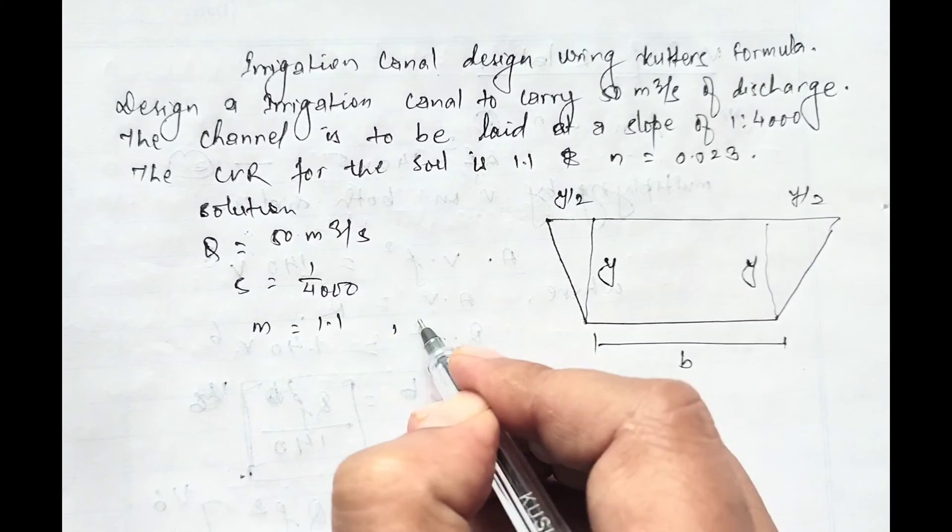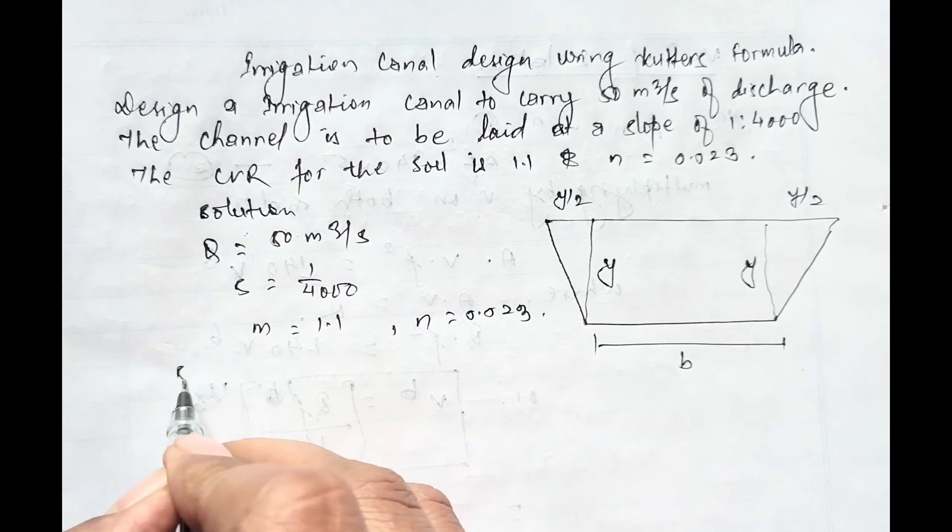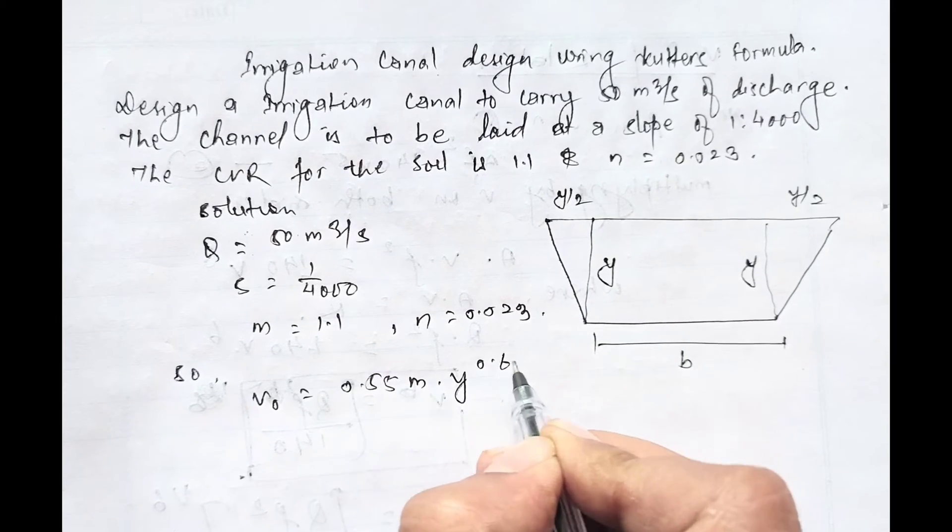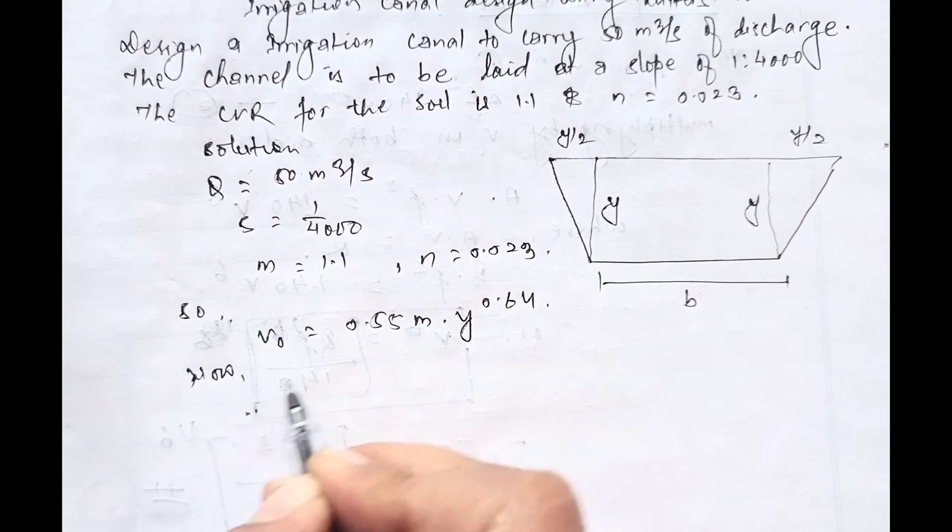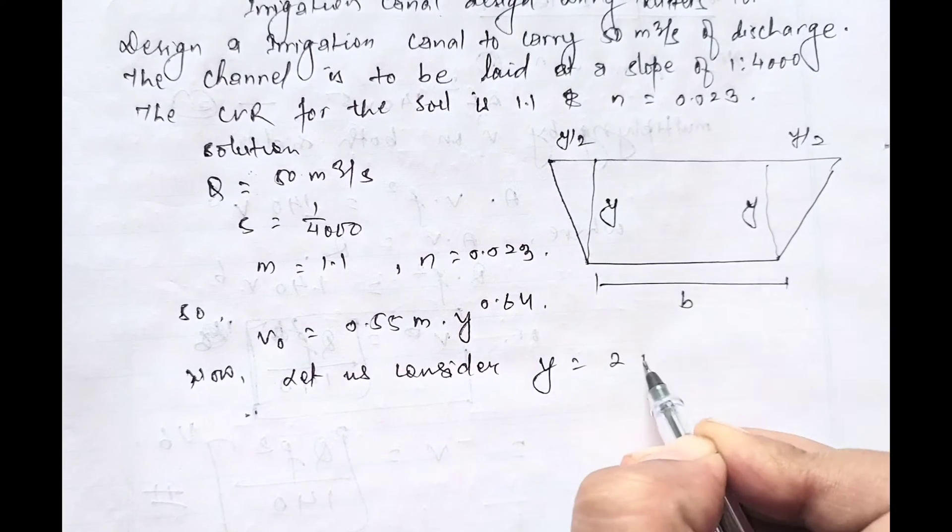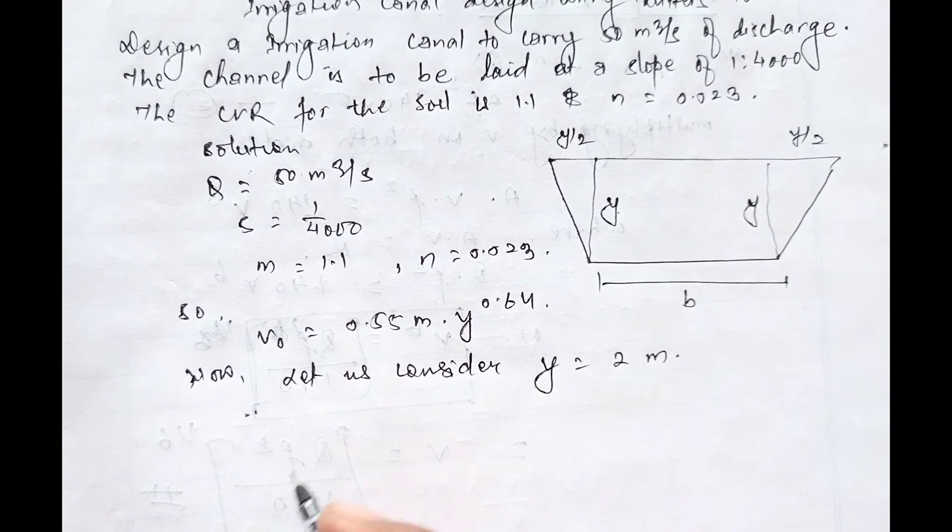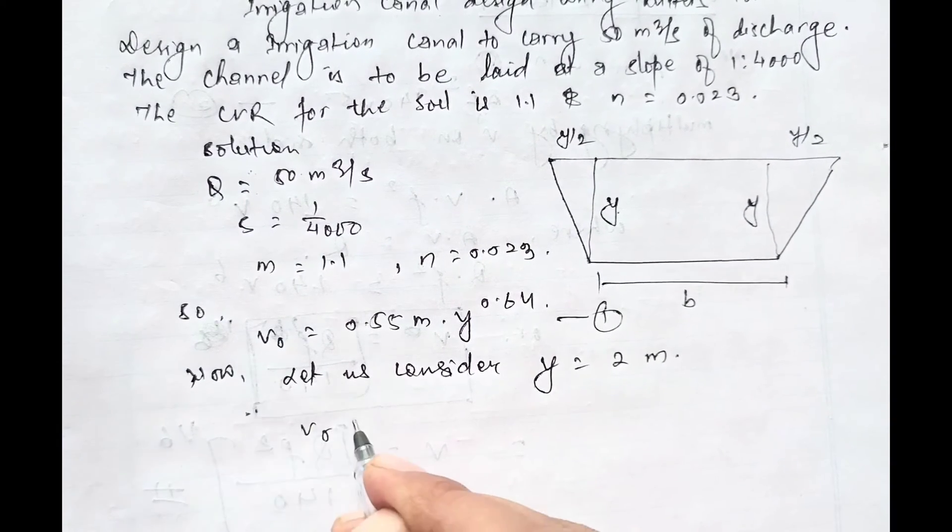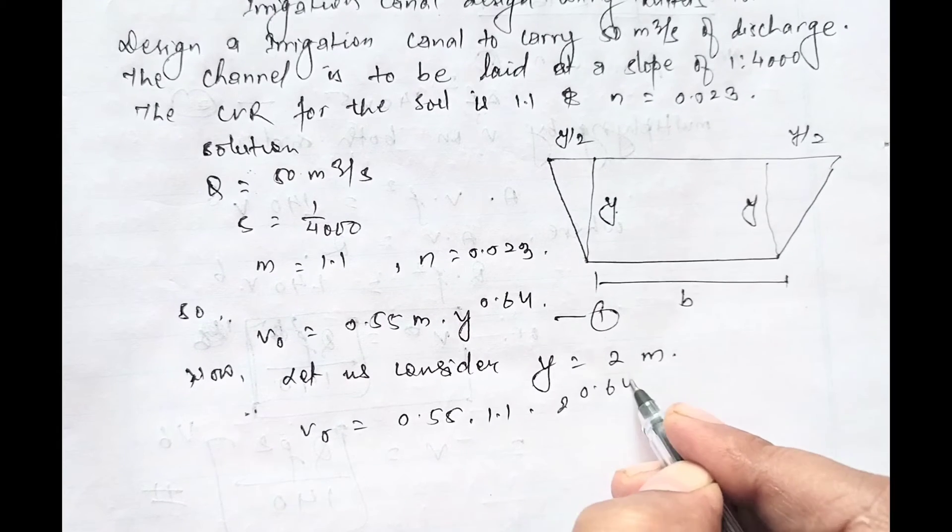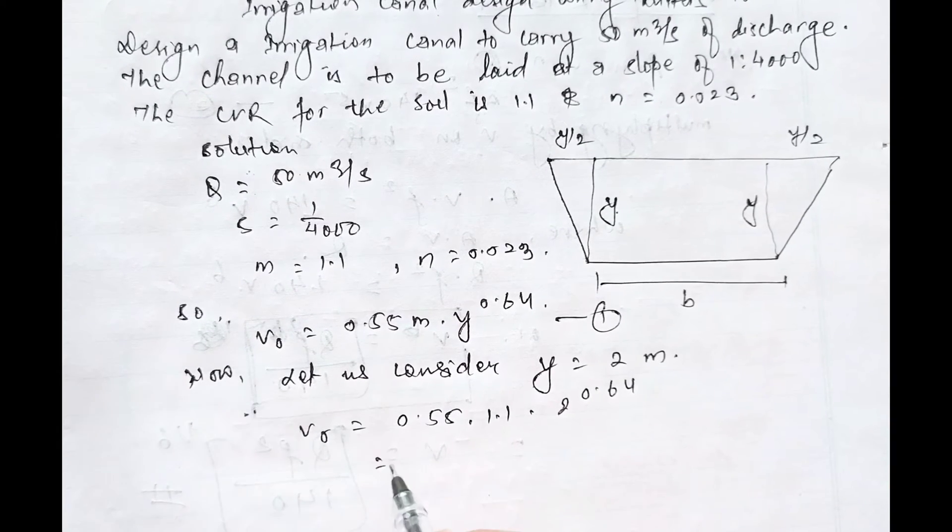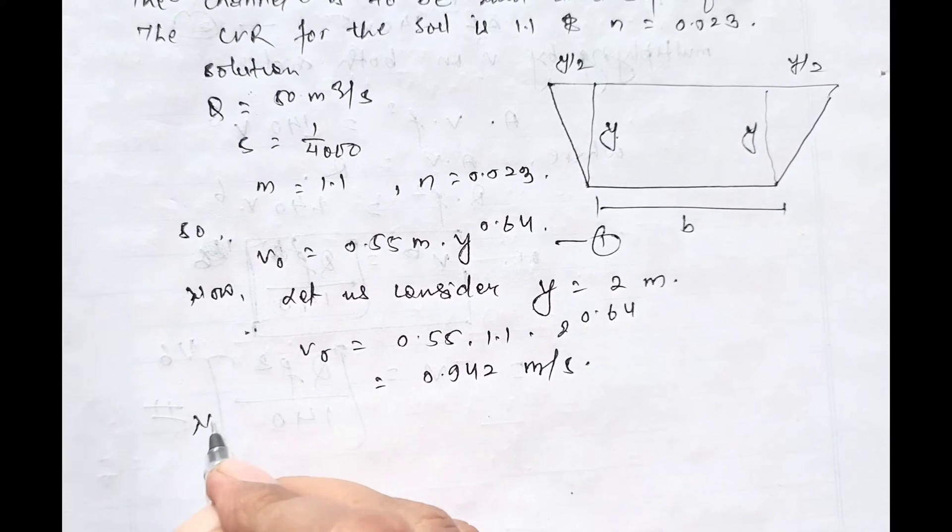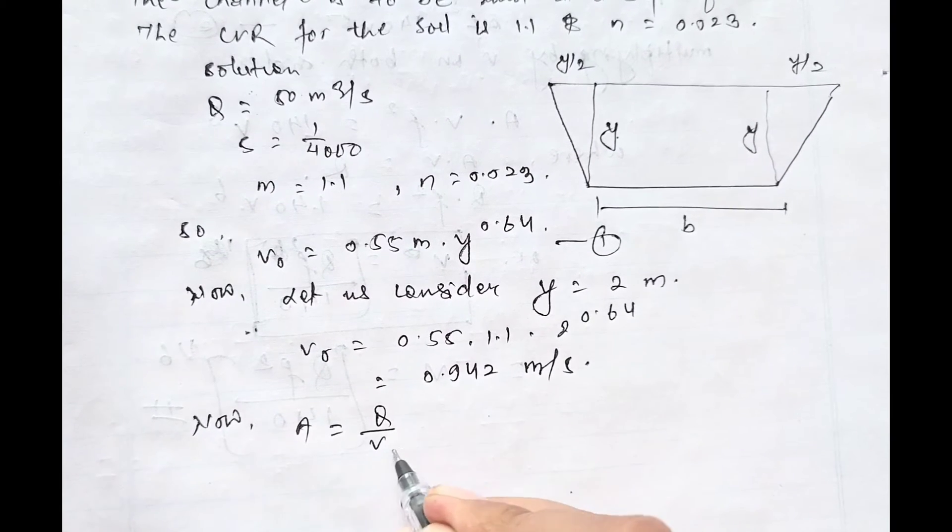Using formula V₀ equals 0.55 m y^0.64. Now let us consider y equals 2 meter depth. Using the value of y in this equation: V₀ equals 0.55 × 1.1 × 2^0.64. On solving this, the velocity will be 0.942 meter per second.